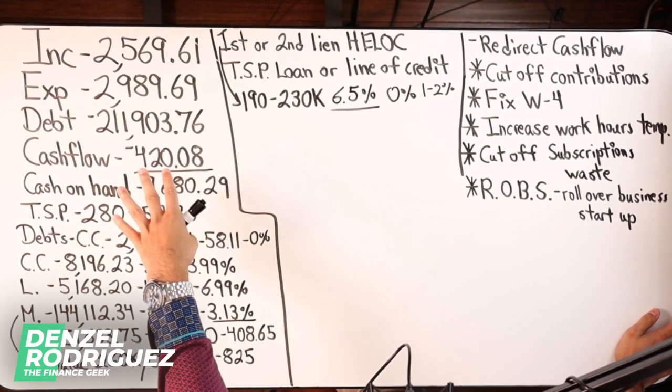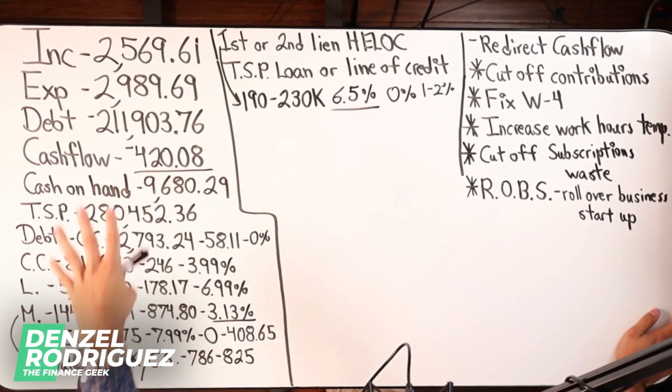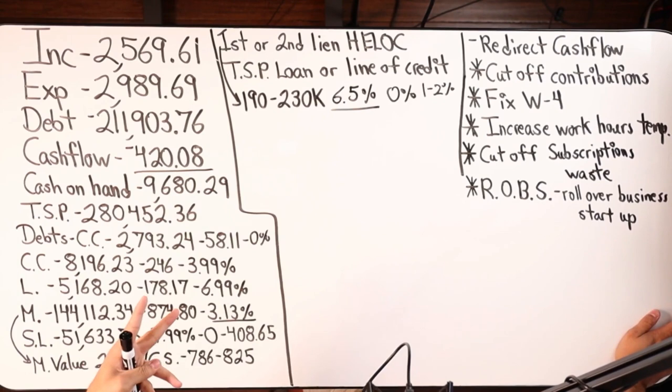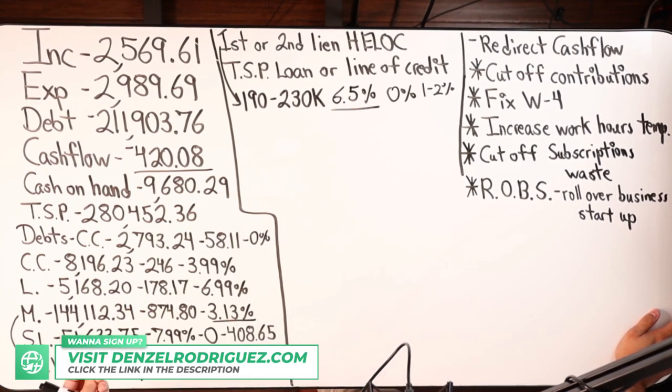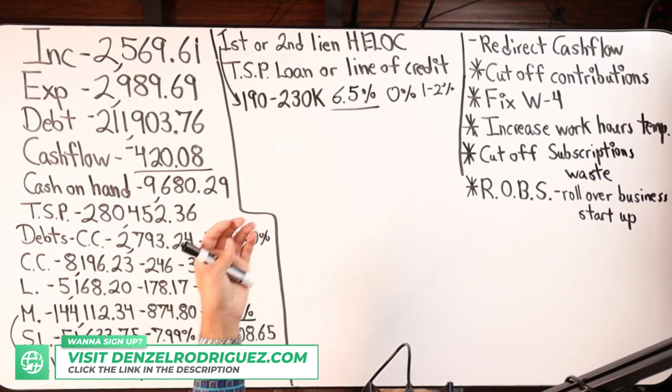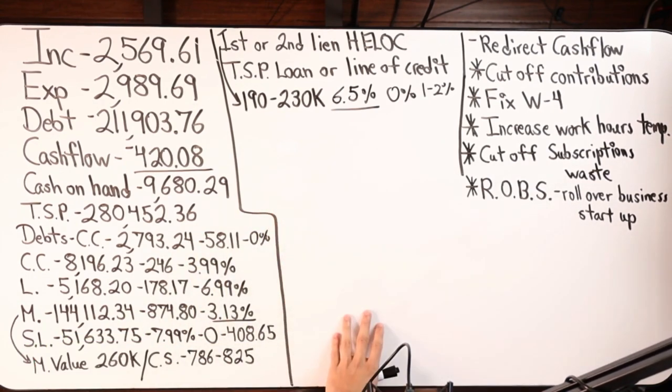So, you've got to know your numbers. We went over the debts based on the numbers I looked for opportunities. For this person, they got the HELOC - that's a potential option. First lien or second, I would prefer first.